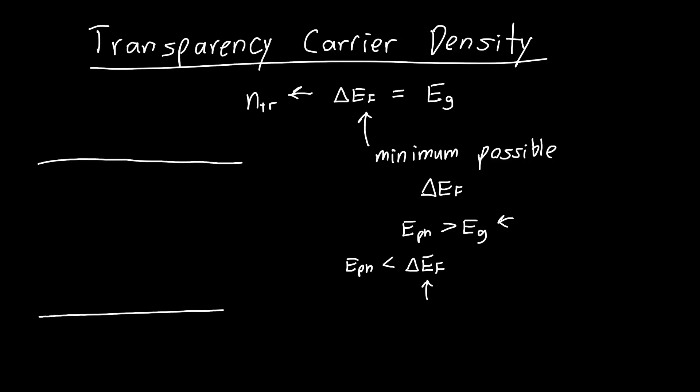If we try to figure out what NTR is using what we know so far, using the Boltzmann approximation, we know that this is our intrinsic Fermi energy, EFI. This is slightly higher than mid-gap, so this is EG over 2, or if we want to be precise, EC plus EV over 2.